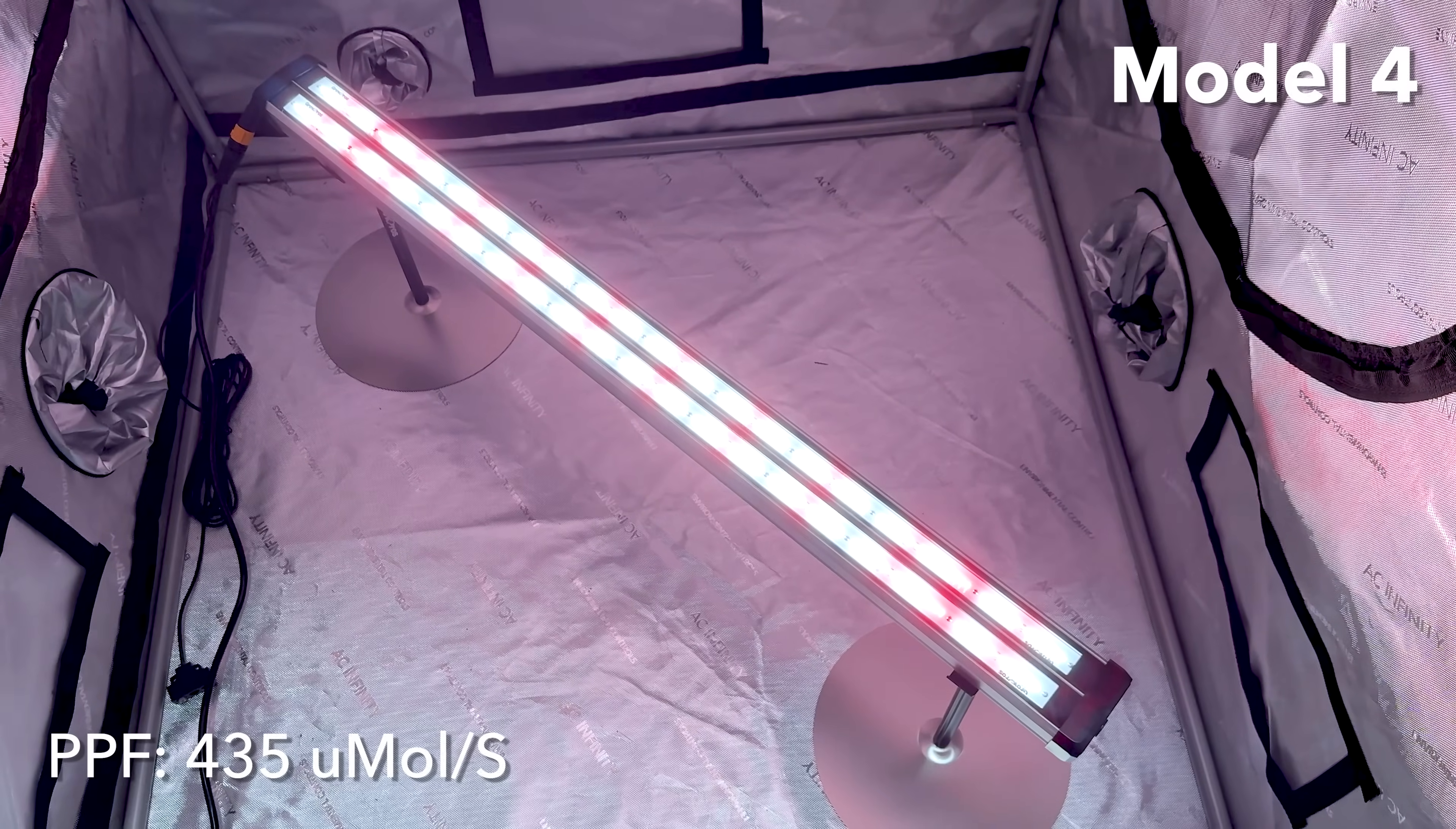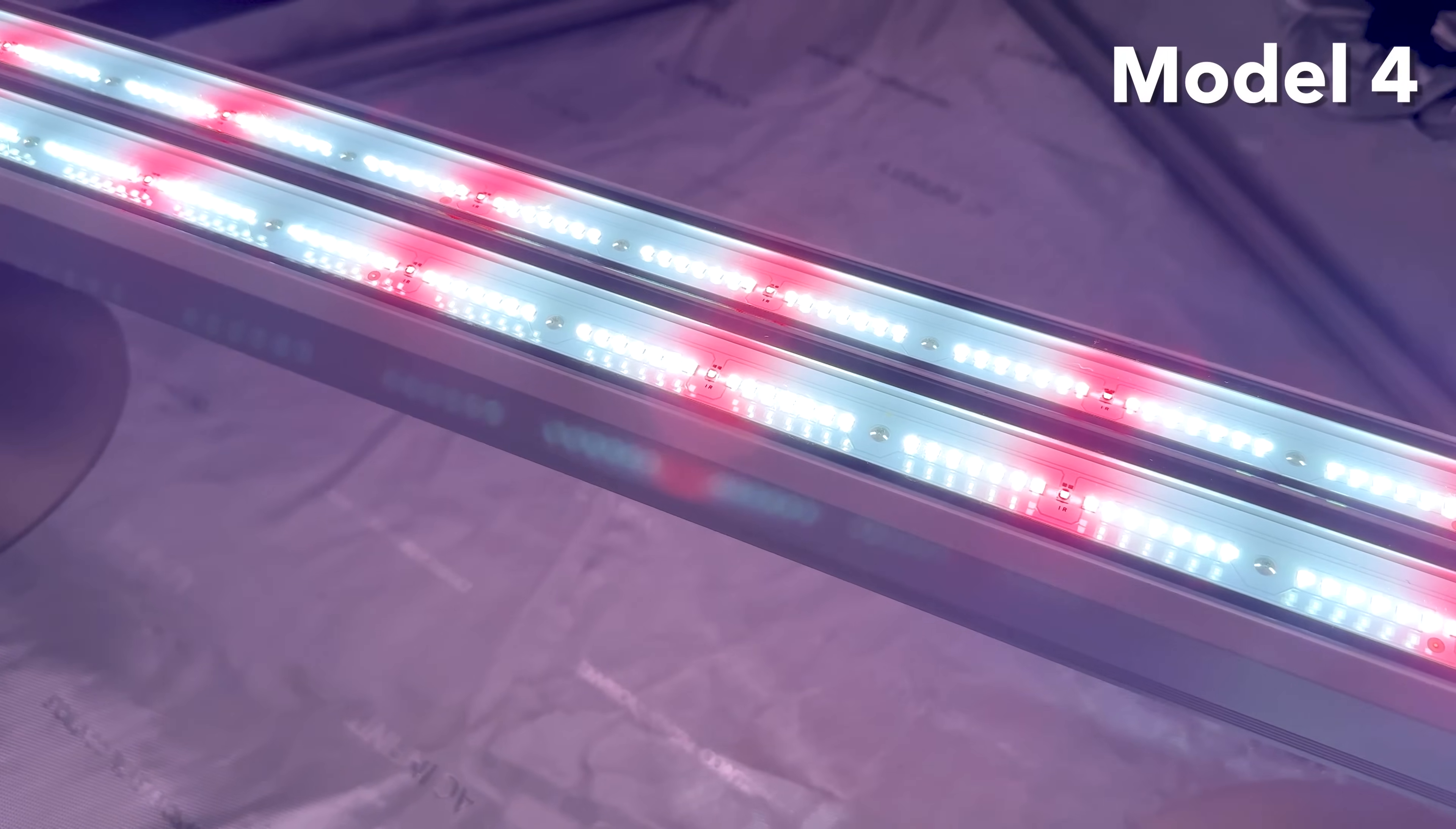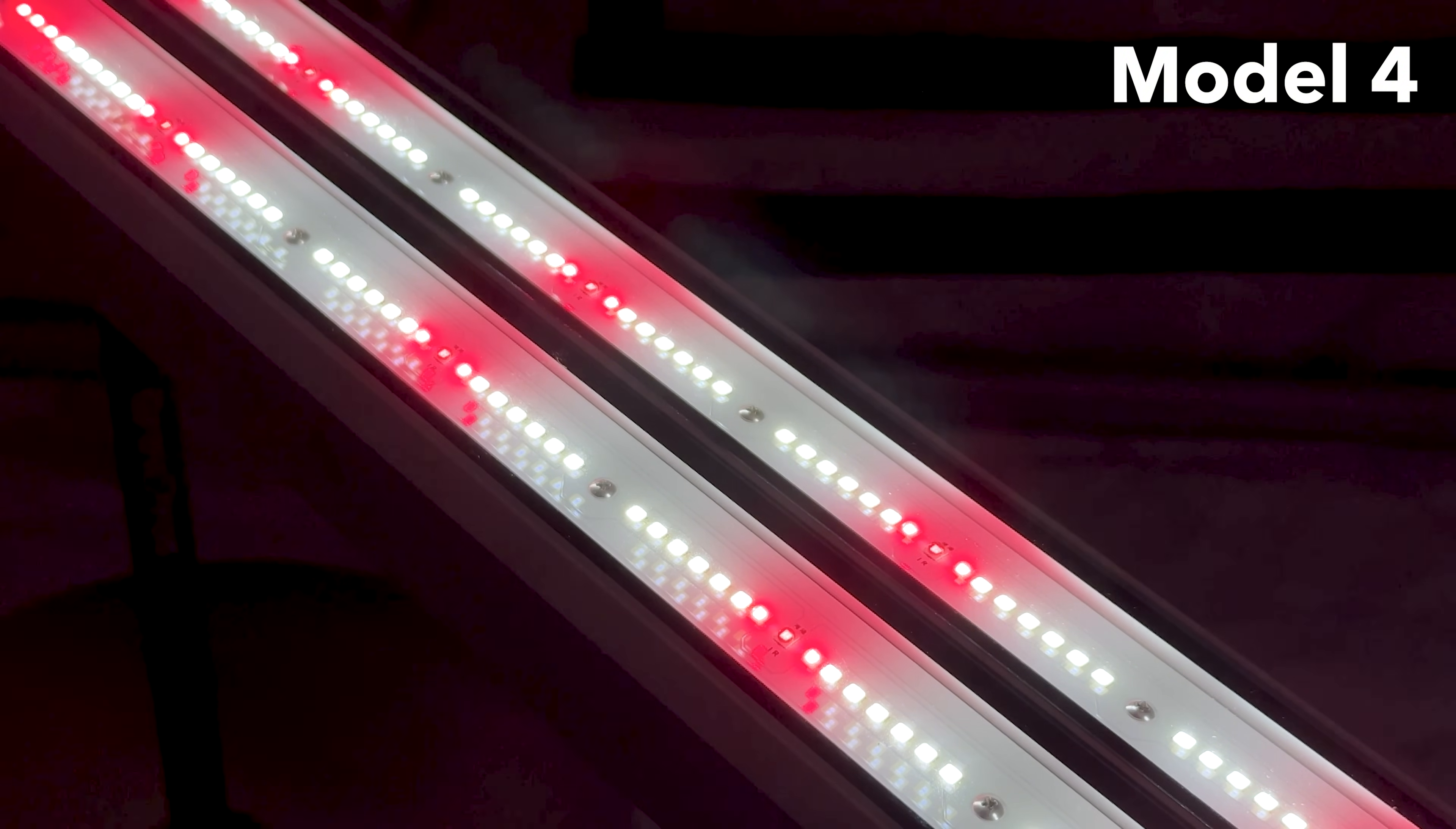With a PPF of 435 micromoles per second and a PPE of up to 2.9 micromoles per joule, these lights deliver excellent energy efficiency and light intensity. Growers can expect more uniform maturity across the canopy, a higher percentage of A and B buds, and increased grams per cubic foot of canopy. Less labor-intensive trimming and sorting further enhances ROI.